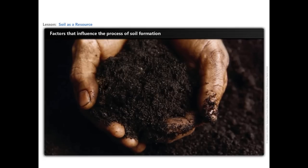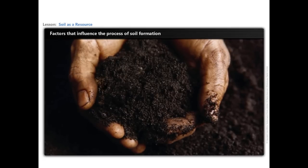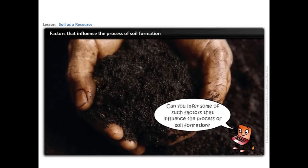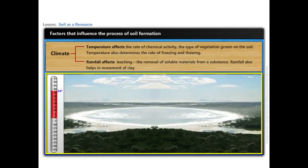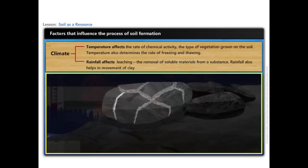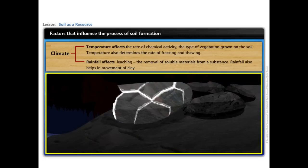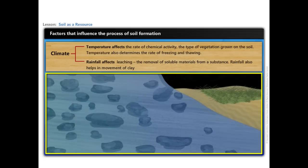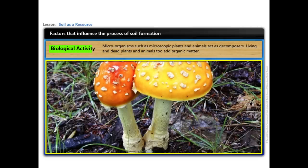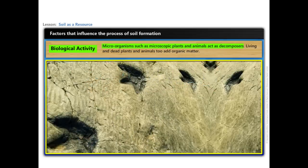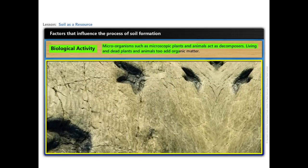There are various other factors that play an important role in the process of soil formation. Climate: temperature affects the rate of chemical activity and the type of vegetation grown on the soil. Temperature also determines the rate of freezing and thawing. Rainfall affects leaching — the removal of soluble materials from a substance — and helps in movement of clay. Biological activity: macroorganisms such as microscopic plants and animals act as decomposers. Living and dead plants and animals also add organic matter.